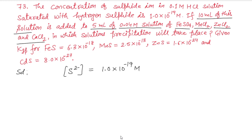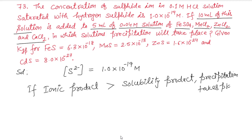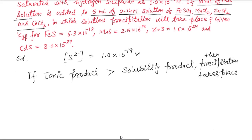So you know what is the rule of precipitation? If ionic product is greater than solubility product, then precipitation takes place.